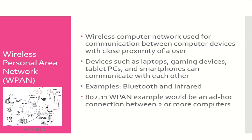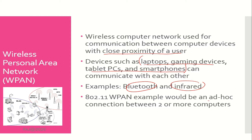Wireless Personal Area Network is a wireless computer network used for communication between computer devices in close proximity to a user. Devices such as laptops, gaming devices, tablet PCs, and smartphones can communicate with each other. The most common technologies in wireless PAN are Bluetooth and infrared. An 802.11 wireless PAN example would be an ad-hoc connection between two or more computers.